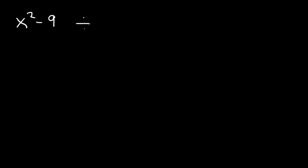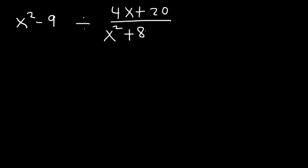Now let's focus on dividing rational expressions. Let's say we have x squared minus 9 divided by 4x plus 20, over x squared plus 8x plus 15. How can we divide these expressions? First, let's turn this into a fraction — let's put x squared minus 9 over 1.